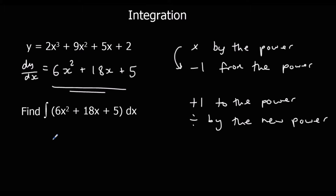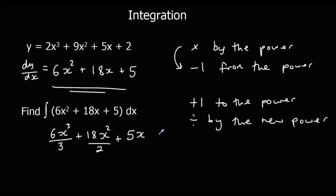So the process: add 1 to the power, then divide by the new power. We add 1 to the power and divide by the new power. For 5x to the power of 0, if we add 1 to the power it'll go to 5x. You see, we had a 2 here that disappeared; so whenever you differentiate, if there's just a number, it's going to disappear. So in order for integration to undo that, what we do is we write plus c on the end.